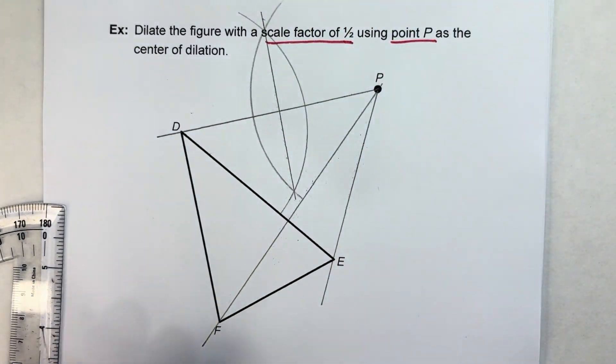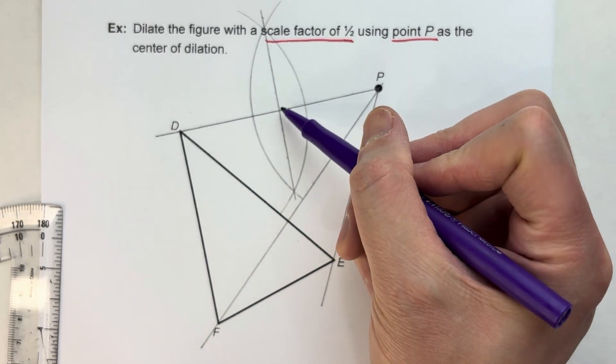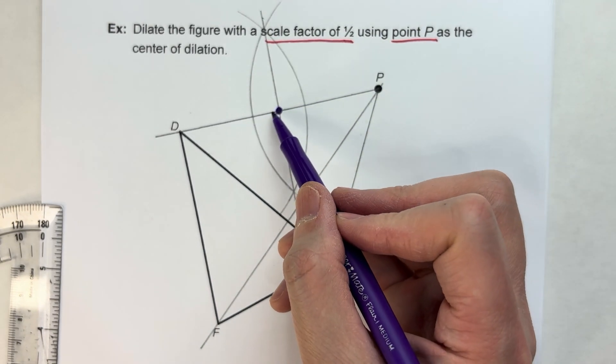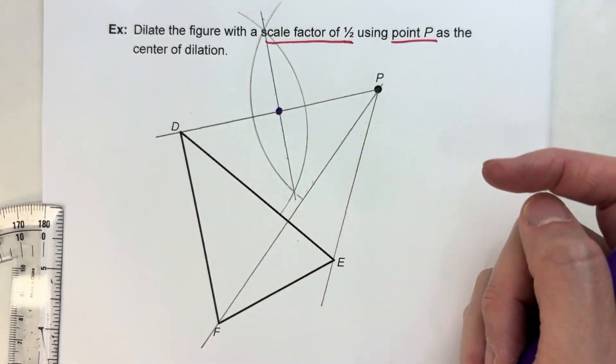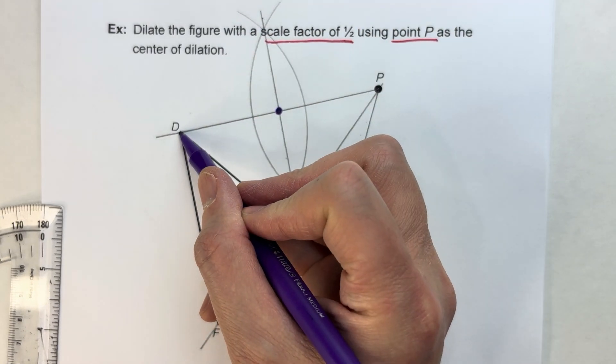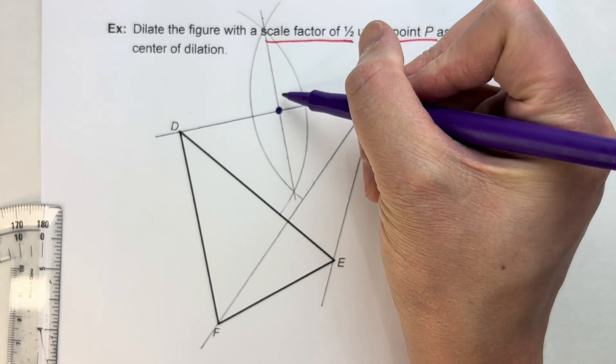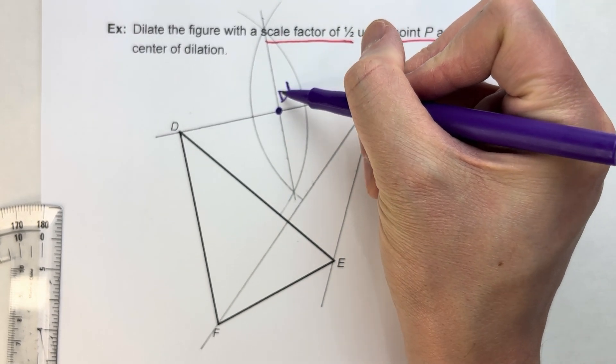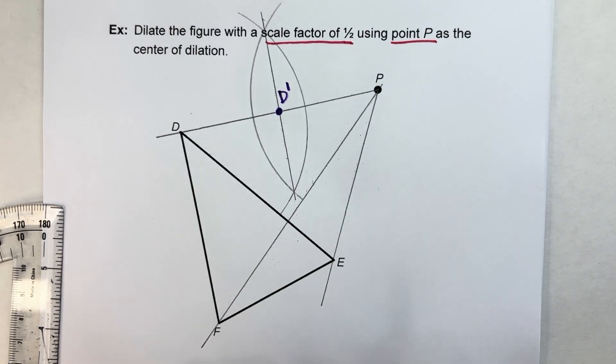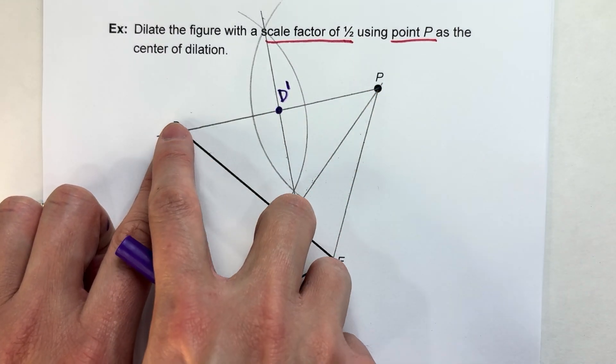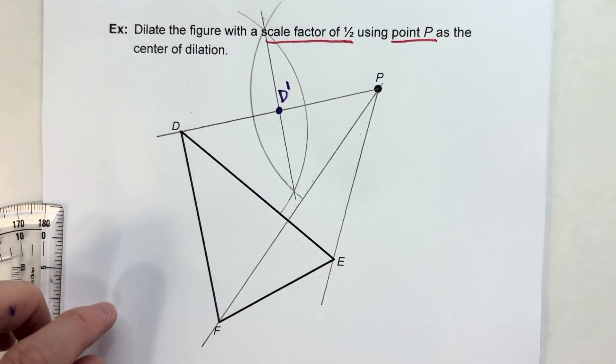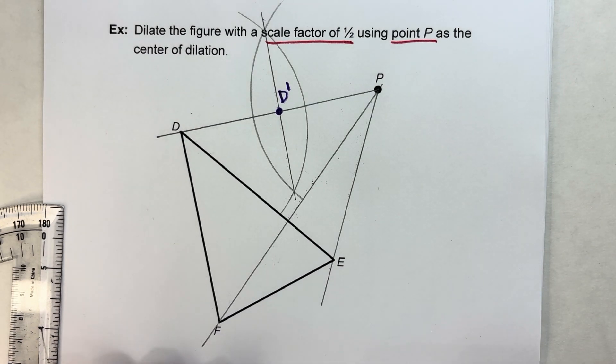And where these two arcs intersect is my perpendicular bisector of the segment. And the reason why that's helpful is because this point right here has to be the midpoint of the segment because this line cuts the segment in half. So if this was my original D, this is my D prime. And notice D prime is half the distance to P that D was. And we're going to do the same thing for all the other points now.